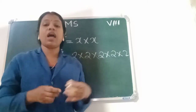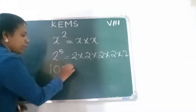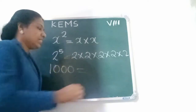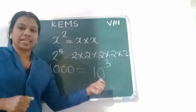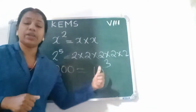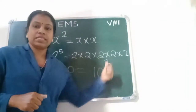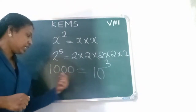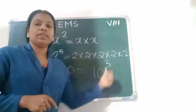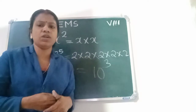We know that 1,000 can be written in power form as 10 power 3 — that is 10 to the power 3. Here, we count the number of zeros and write that number as the power. 1,000 has 3 zeros, so we write it as 10 power 3, which equals 10 into 10 into 10 = 1,000.